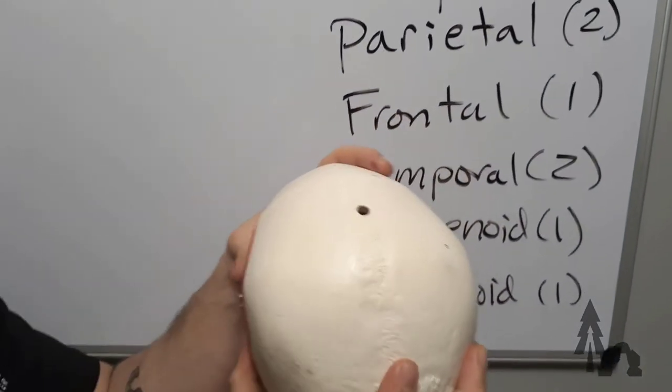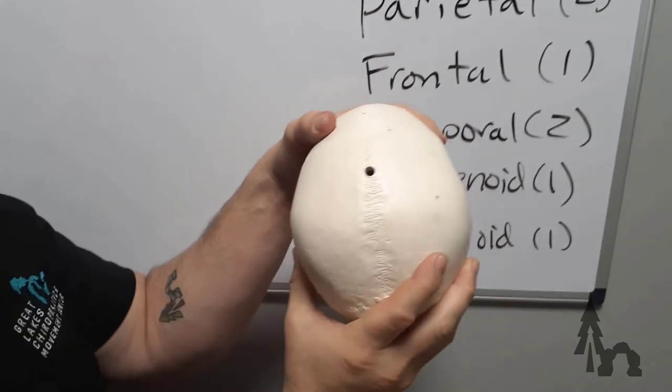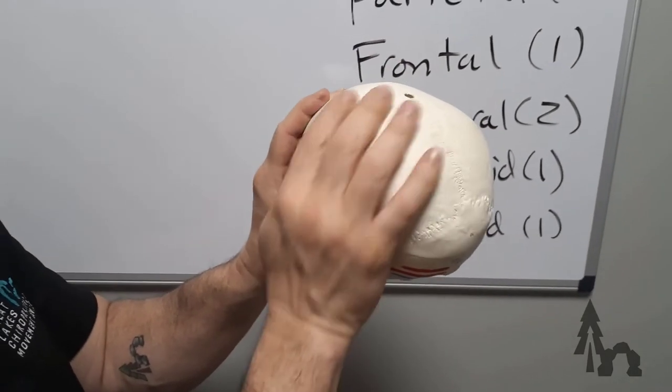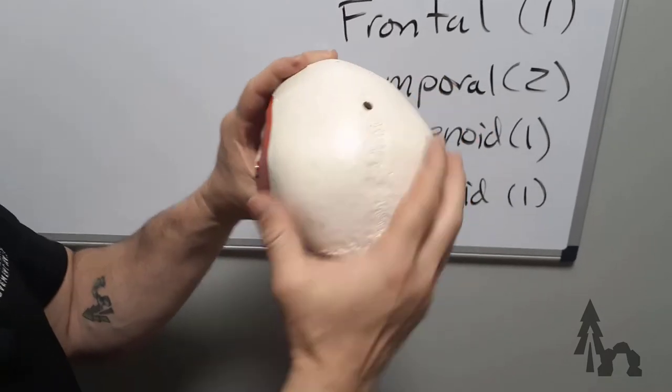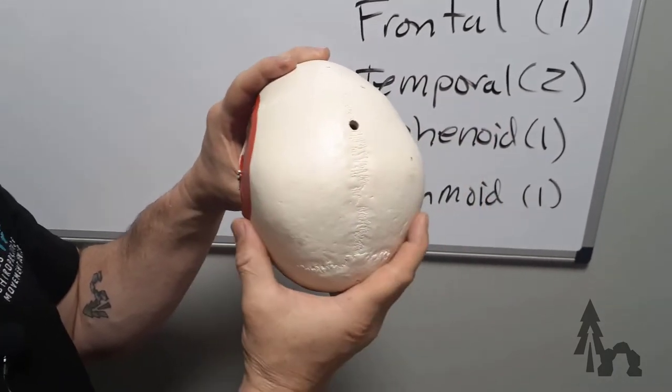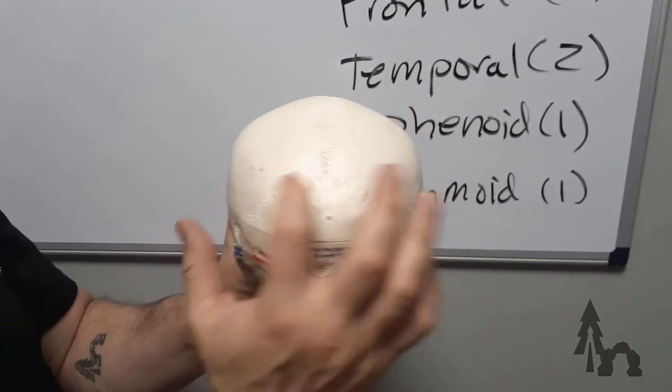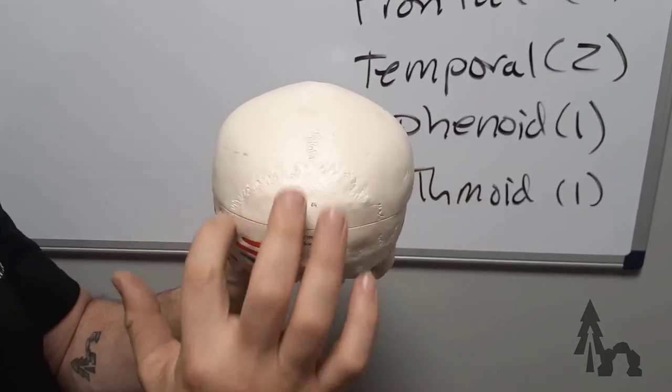The next pair of bones will be the parietal bones. These would be the corner of your skull, these large parietal bones. They're paired right and left. They're going to articulate with each other right in the midline and with the occipital bone on this line back here.